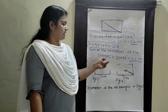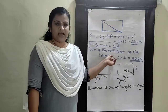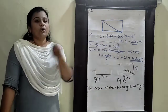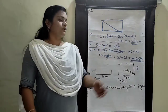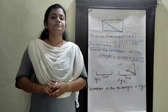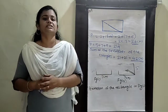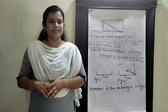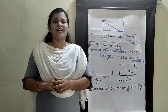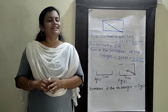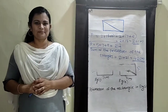Understood? Rectangles and triangles. Okay children, I hope you all understood this. So many questions are given in your textbook — you do those. Okay children, let us end the class now. We will meet in the next class. Bye bye.